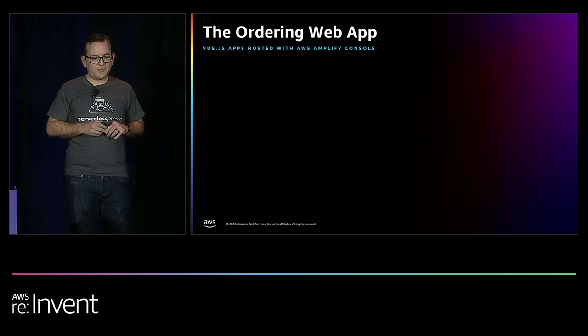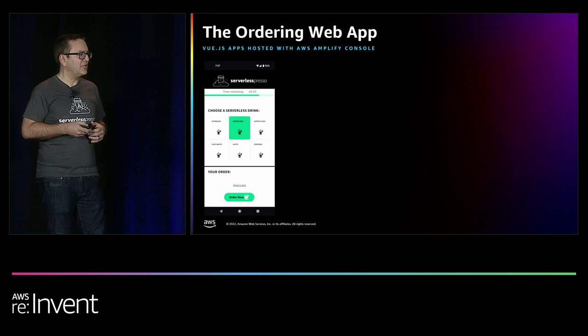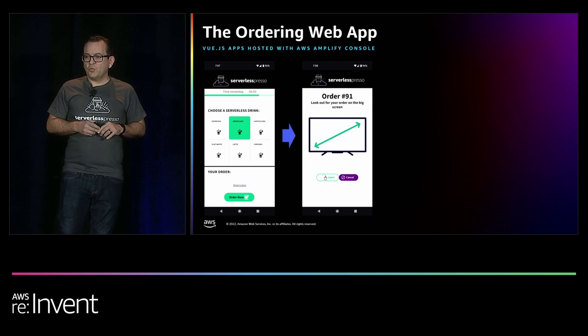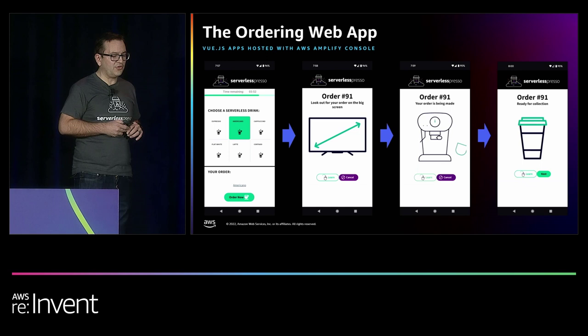The ordering web app is what the customer uses on their phone. They scan the QR code, log in, see the menu, and select the drink they want — latte, cappuccino, whatever modifiers they prefer. Once they hit submit, they get an order number, and then when the barista starts making the drink, they get a notification indicating it's in a pending status, and finally when it's ready, they get another notification.